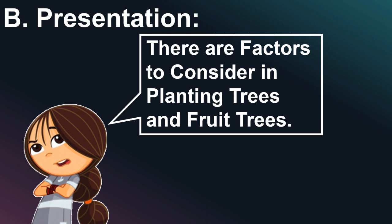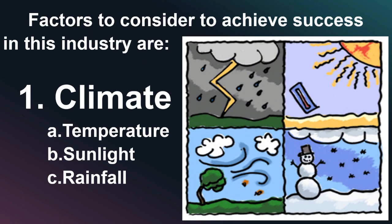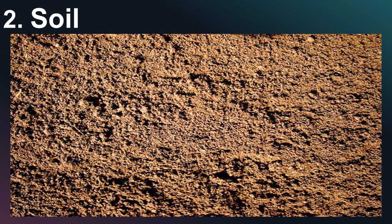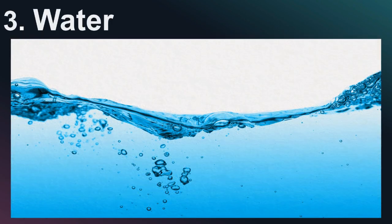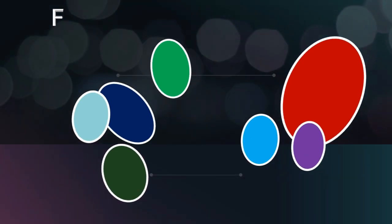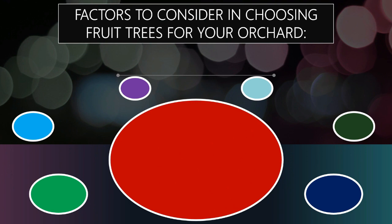There are factors to consider in planting trees and fruit trees. One: climate. Two: soil. Three: water. Four: fertilizer. These are the factors to consider in choosing fruit trees for your orchard.